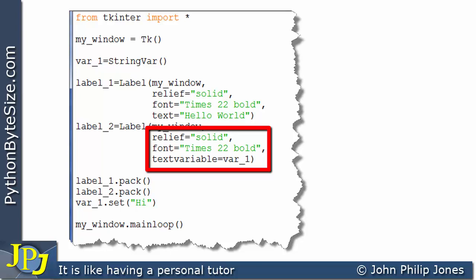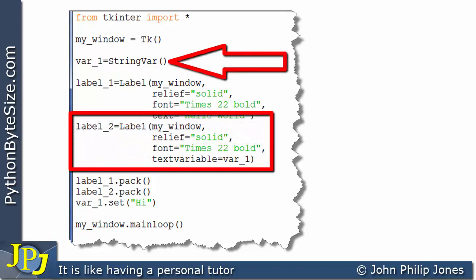Instead, on this label, we have this line. And what's happening here, we have the word text variable and it's been assigned var1, where var1 is the string variable that was created on this line. And this key value pair links this label to this variable.